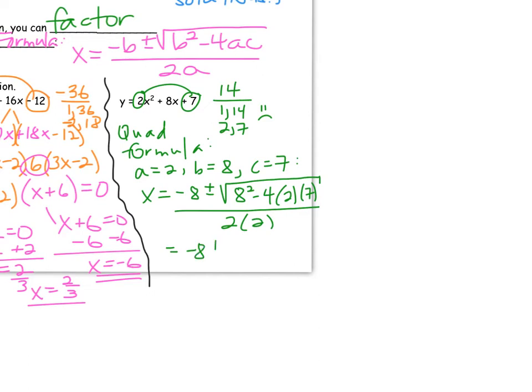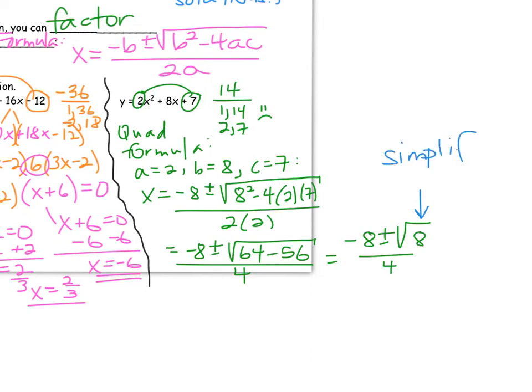Alright, let's simplify. Negative 8 plus or minus, 8 squared is 64. 4 times 2 times 7 is 56. All over, 2 times 2, which is 4. Now, 64 minus 56 would be 8. So 64 minus 56 is 8, and then all over 4. Now, we have to be careful here. We have to simplify the square root first before we reduce the fraction.